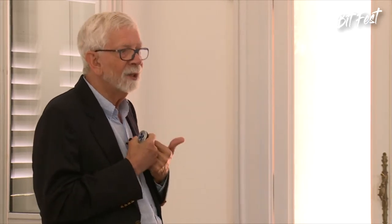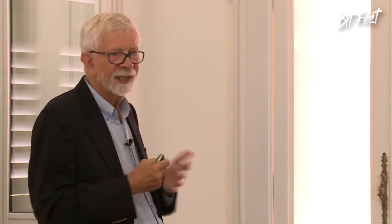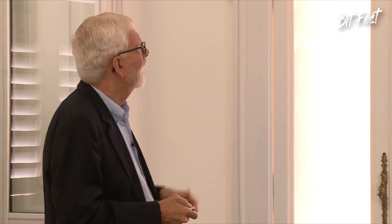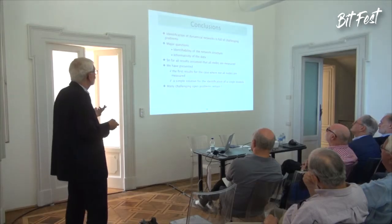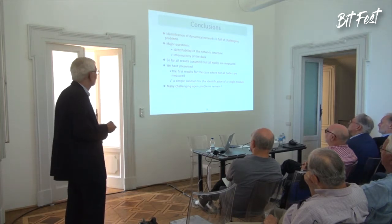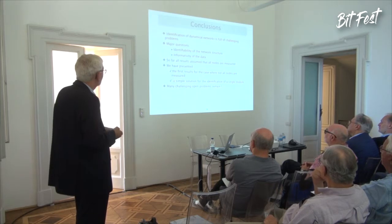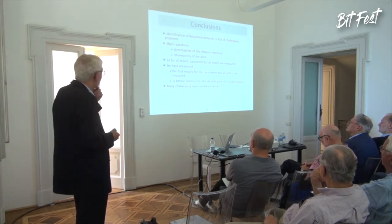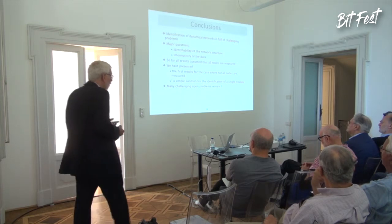Conclusion: identification of dynamical networks is full of challenging problems. I have been working on this for about two and a half years and there are so many interesting questions. The major questions are about identifiability of the network structure and informativity of the data — which nodes we need to excite and with what degree of richness. So far all the results assume that all nodes are measured, and we have presented the first results for the case where not all nodes are measured. This has given us a simple solution for the identification of a single module, but many open problems remain.